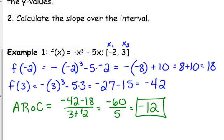So the average rate of change for this function on the interval from negative 2 to 3 is negative 12. So the secant line between negative 2 and 3 is very, very steep, and it is decreasing from left to right.